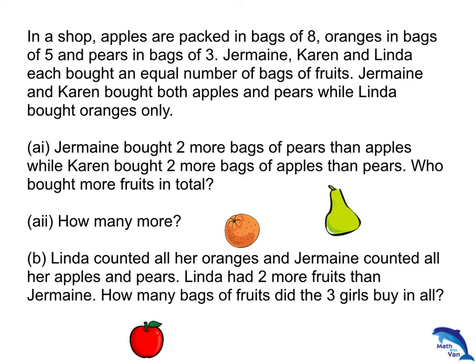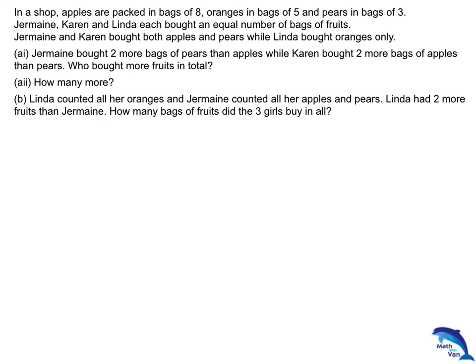Linda counted all her oranges and Jermaine counted all her apples and pears. Linda had 2 more fruits than Jermaine. How many bags of fruits did the 3 girls buy in all? For part A, we could solve entirely with the use of a model. So let's take a look.